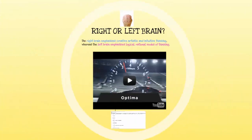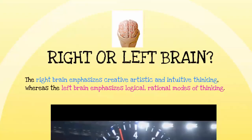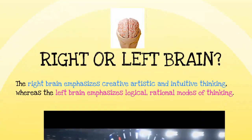Let's take a look at right brain versus left brain. There is physiological evidence to show that our right and left brains emphasize different functions. In general, the right brain emphasizes creativity, artistic, and intuitive thinking, whereas the left brain emphasizes logical, rational modes of thinking.